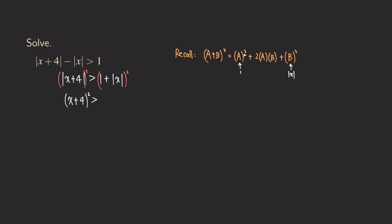So now we are going to square the 1 — we get 1 — and then 2ab means that we multiply them together and multiply by 2, so we get 2 times 1 times absolute value of x. Then squaring the absolute value of x, we just get x squared. And on the left side we need to expand it, so we get x squared plus 8x plus 16, and that is greater than 1 plus 2 times absolute value of x plus x squared.